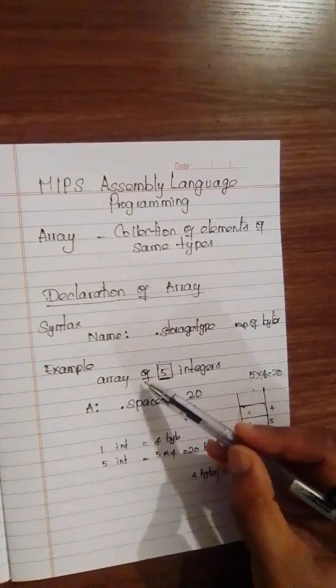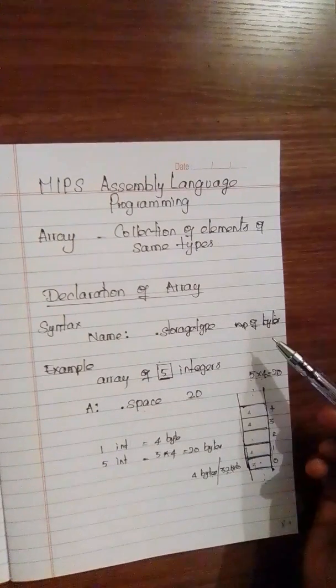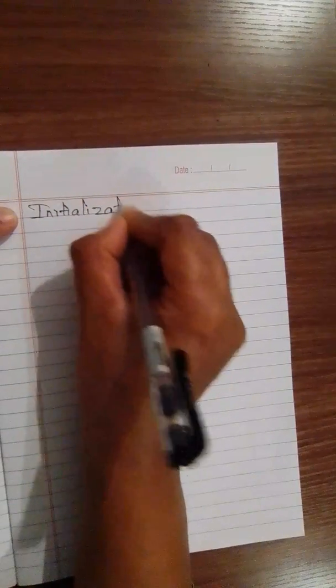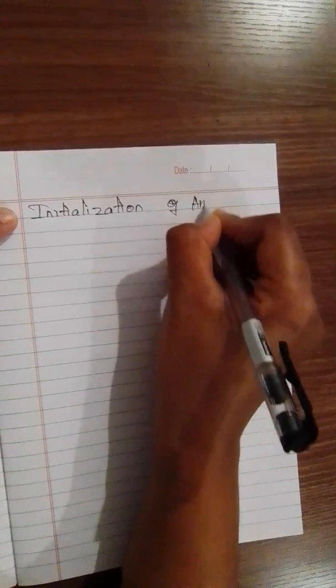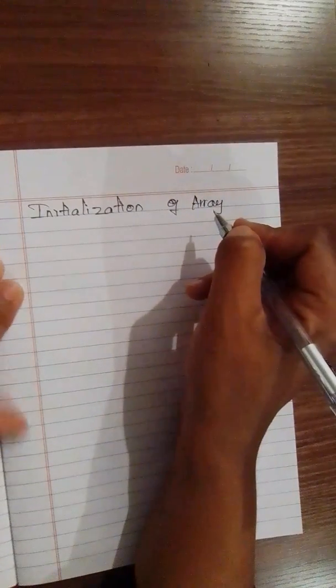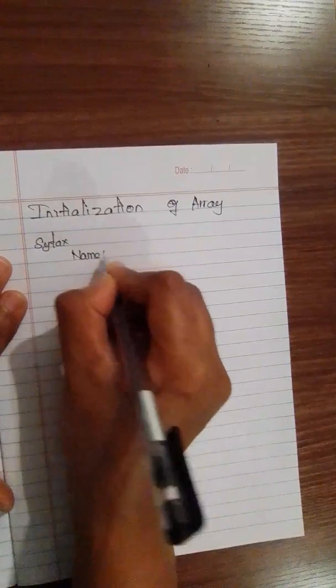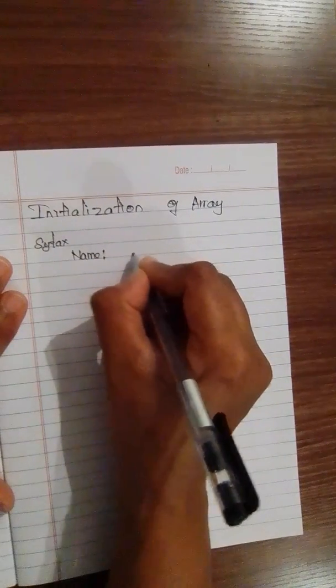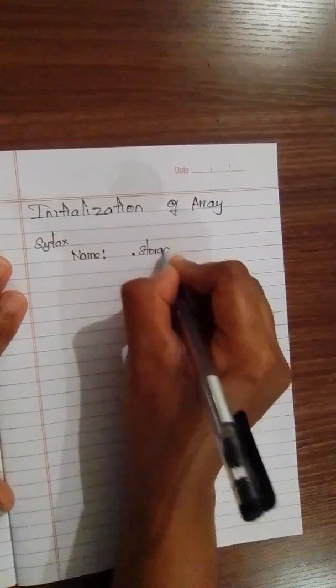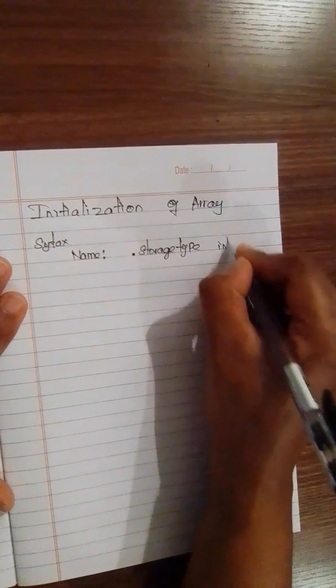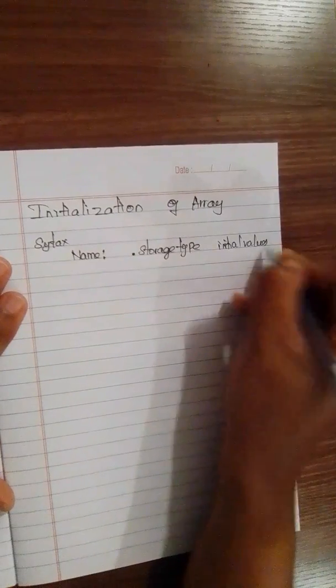If you need an array of three integers, that would be 3 times 4 equals 12 bytes. That covers the declaration of an array. Now let's see the initialization of an array. In initialization, we declare and assign initial values. The syntax: give a name to the array, followed by a colon, then the storage type — specifying what type of data you are going to initialize — followed by the initial values.